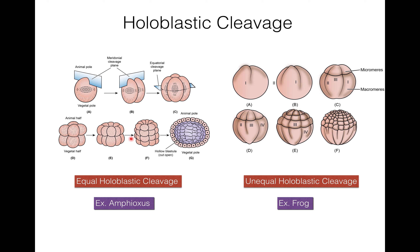In equal holoblastic cleavage, the amount of yolk is less and distributed evenly in the egg. Cleavage occurs in the whole egg and blastomeres are of the same size. All parts of the egg show the same rate of cleavage. The first and second cleavages are meridional, then equatorial, and by these divisions blastomeres of equal size are formed, followed by formation of the blastula.